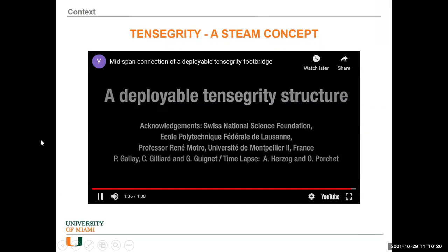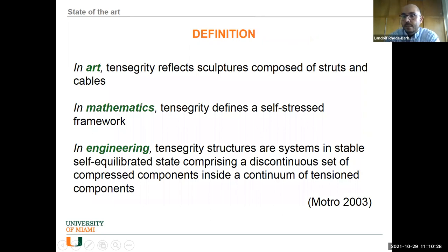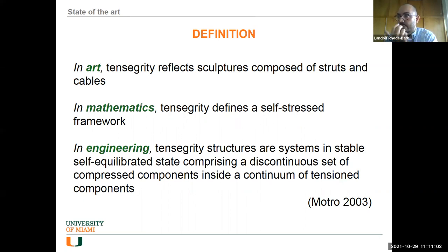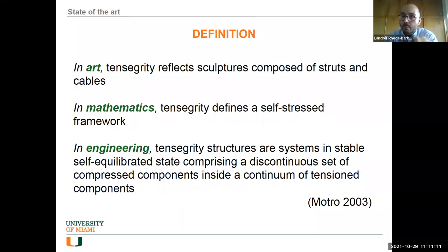Let's talk about what exactly we mean by tensegrity. In art it's a sculpture — an artifact made of struts and cables, sometimes called strings and sticks. In mathematics, it's about self-stress frameworks: idealized nodes and edges with certain properties giving equilibrium. In engineering, René Motro gave a more well-defined definition, talking about a system in a stable, self-equilibrated state. Directly we see key properties: it's a system with components described as a discontinuous set of compressed components inside a continuous set of tension components — you have tension and compression, identifying the cables and the struts.